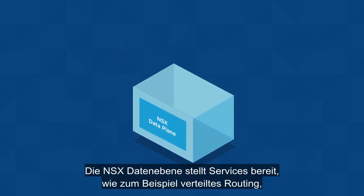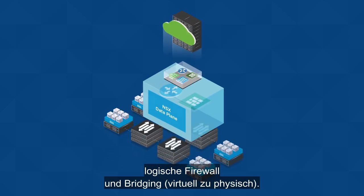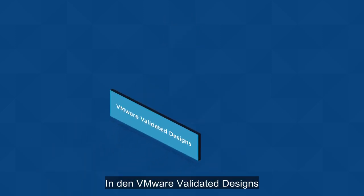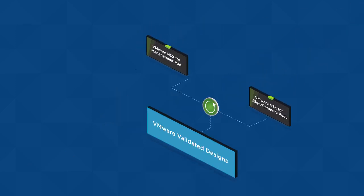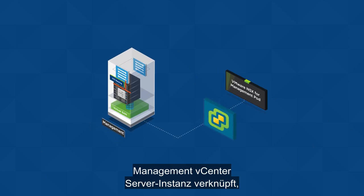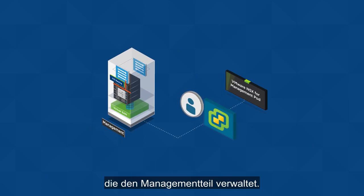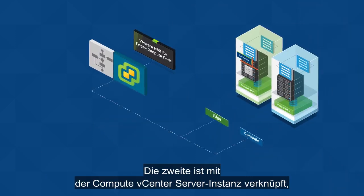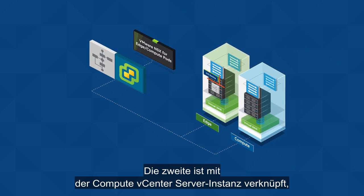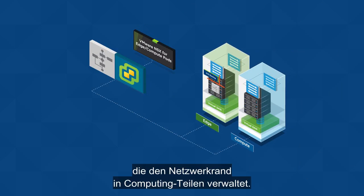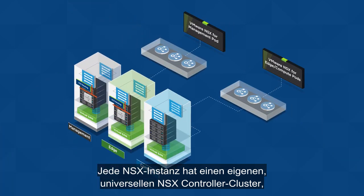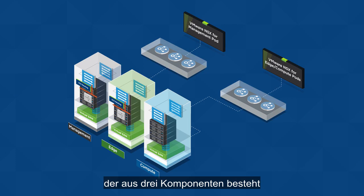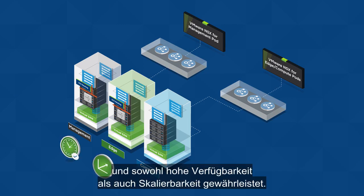The NSX data plane provides services such as distributed routing, logical firewall, and virtual to physical bridging. In the VMware validated designs, two separate NSX instances are deployed. One instance is associated with the management vCenter server instance which manages the management pod, and the second is associated with a compute vCenter server instance which manages the edge and compute pods. Each NSX instance has a dedicated universal NSX controller cluster comprised of three members providing for both high availability and scale.